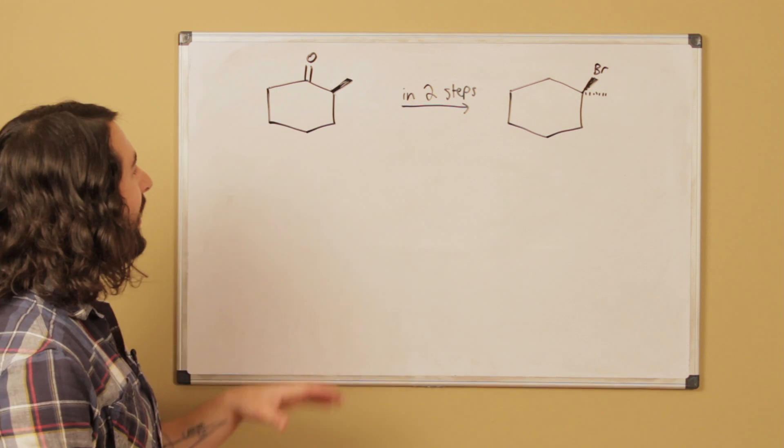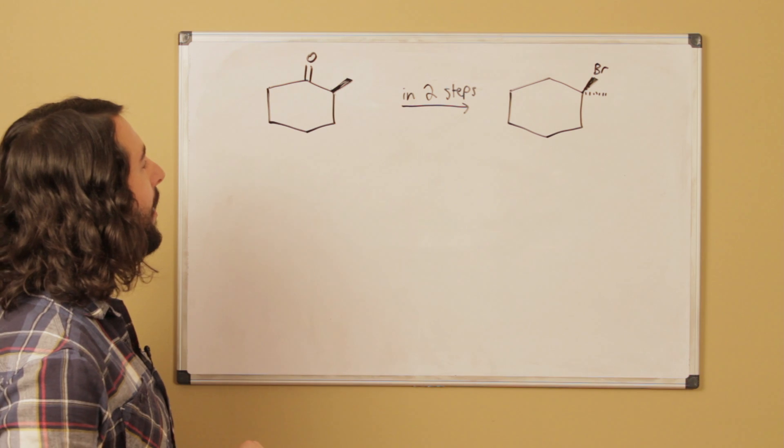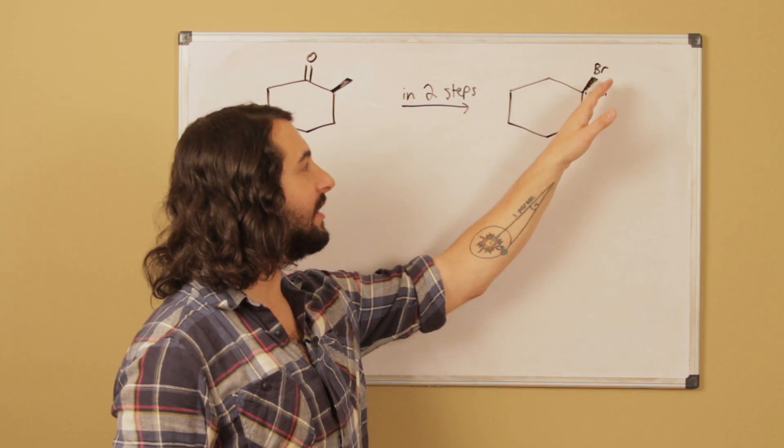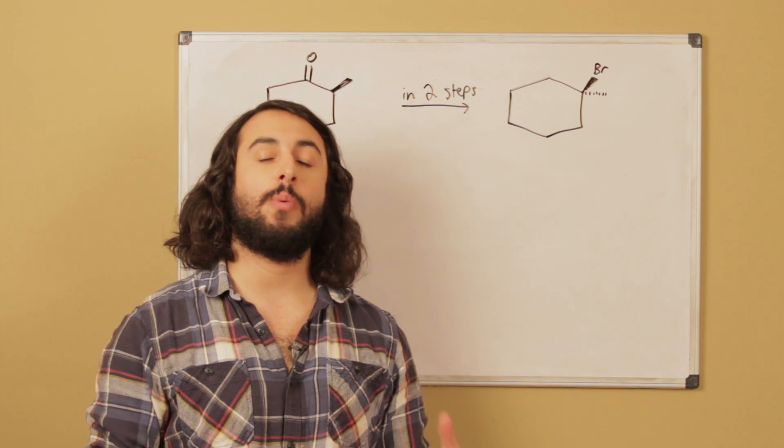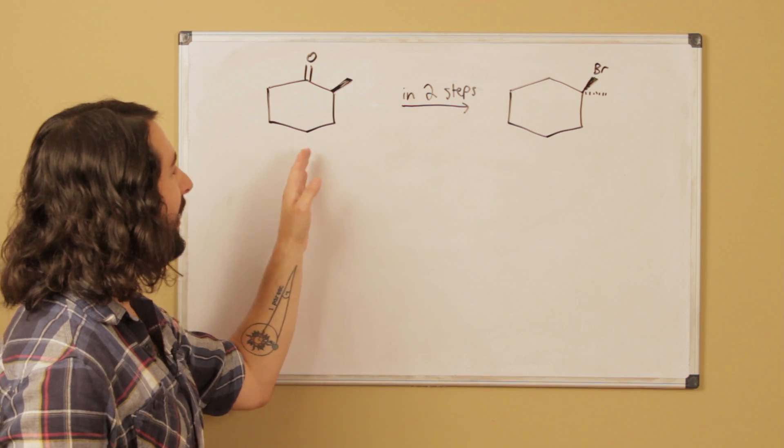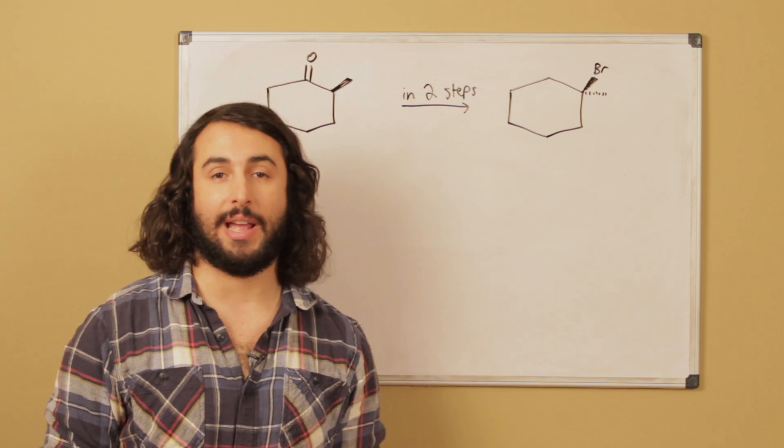Okay, so for today's problem we've got this compound here with a carbonyl and a methyl group, and our target molecule has the methyl and a bromo group. What we want to be able to do is figure out how to get from here to here in two steps. Give it a shot.